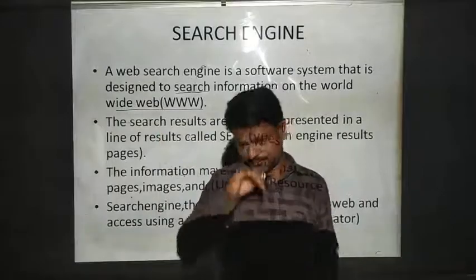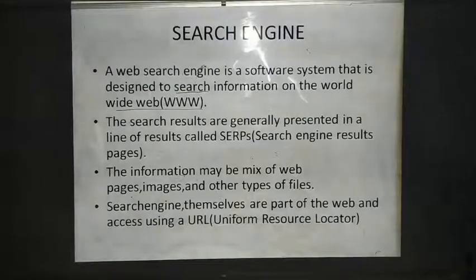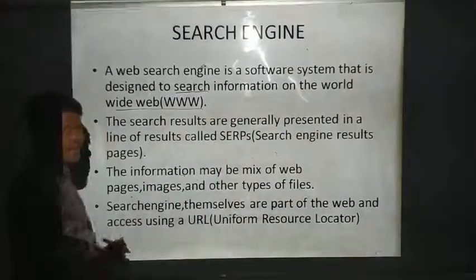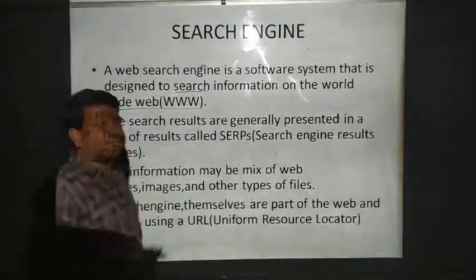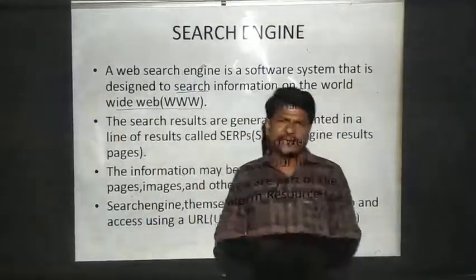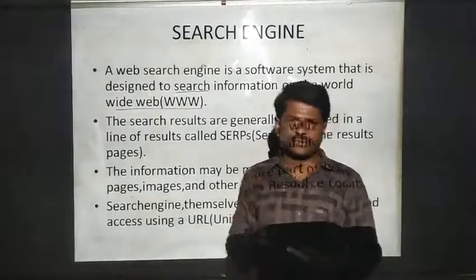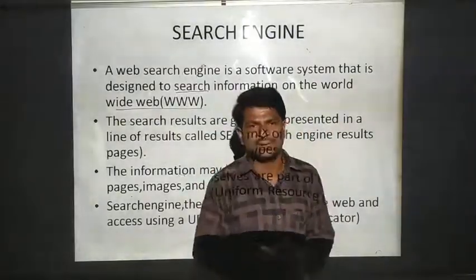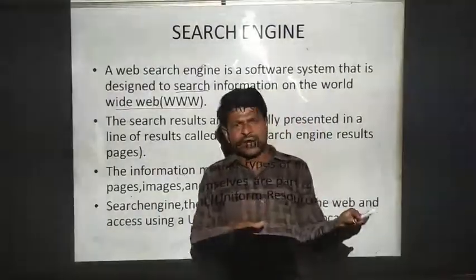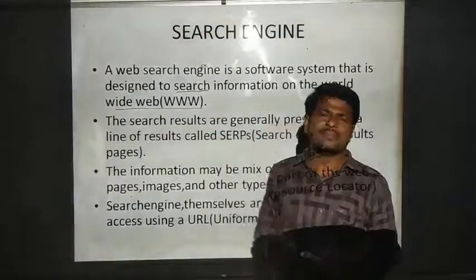The search results are generally presented in a line of results called search engine results pages. For example, in Google, if you type anything — if you give a keyword and search for information — all the information related to that keyword will be displayed line by line.